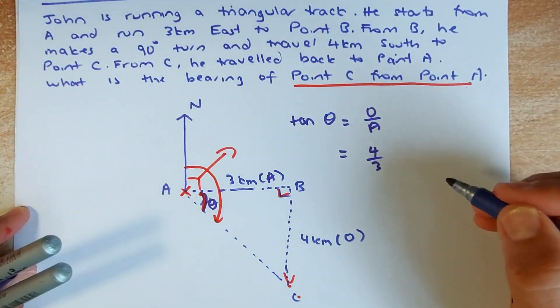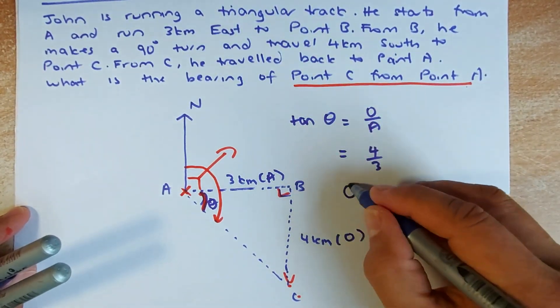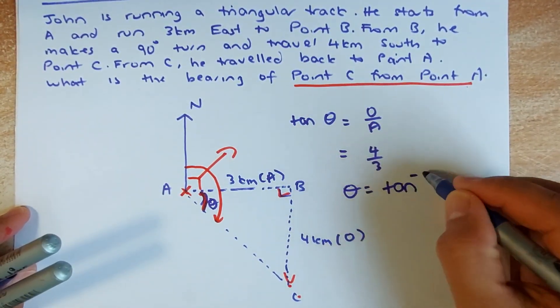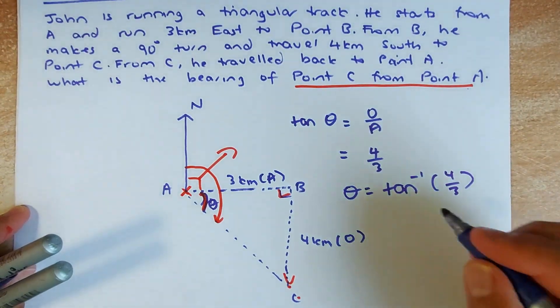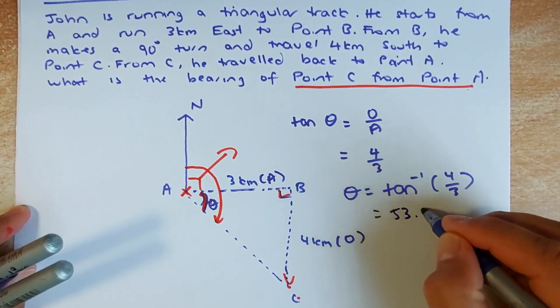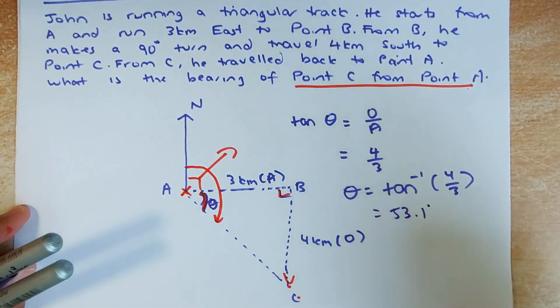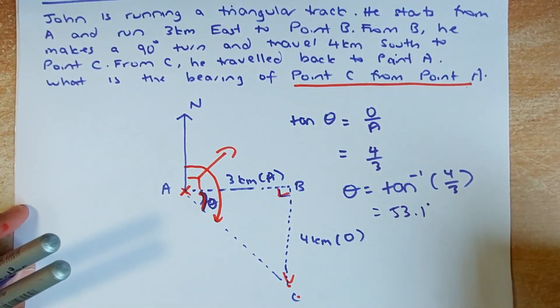So tangent theta, or this we put as theta now, is equal to opposite over adjacent. That will give you 4 divided by 3. To get the angle theta you just put tangent inverse 4 divided by 3. Put in your calculator and the answer is 53.13. We are going to put to 1 decimal place, 53.1.